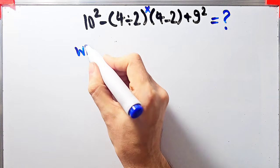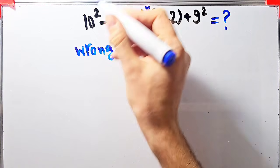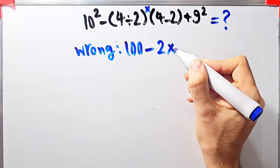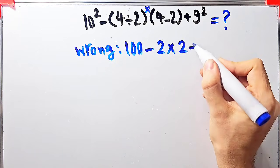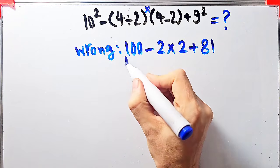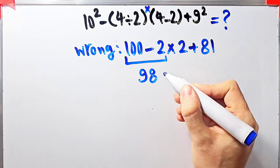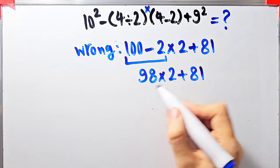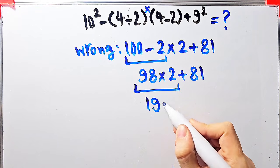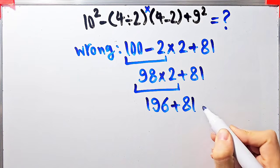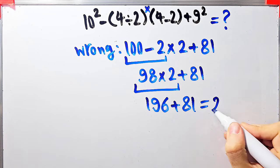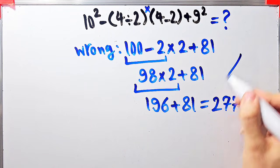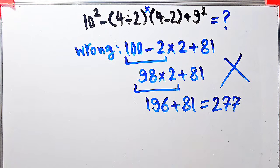In the wrong way of solving this question, some people say: ten to the power of two equals one hundred; one hundred minus four divided by two equals two, times four minus two equals two, plus nine to the power of two equals eighty-one; one hundred minus two equals ninety-eight; ninety-eight times two equals one hundred ninety-six; one hundred ninety-six plus eighty-one equals two hundred seventy-seven. They say the final answer equals two hundred seventy-seven, but this is definitely wrong.